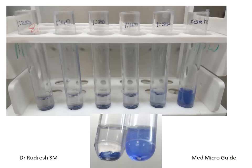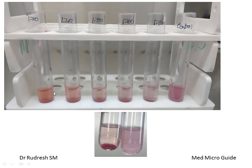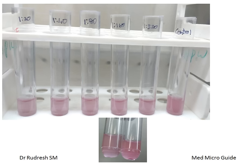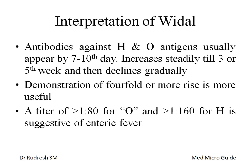A negative test for O antigen shows no clearing and only a small button formation, similar to the saline control. For H antigen, agglutination with clearing and sedimentation indicates a positive result. One important precaution: do not shake the tubes before reading results. Control tubes should show no agglutination. The titer is determined as the highest dilution of the test serum showing agglutination.